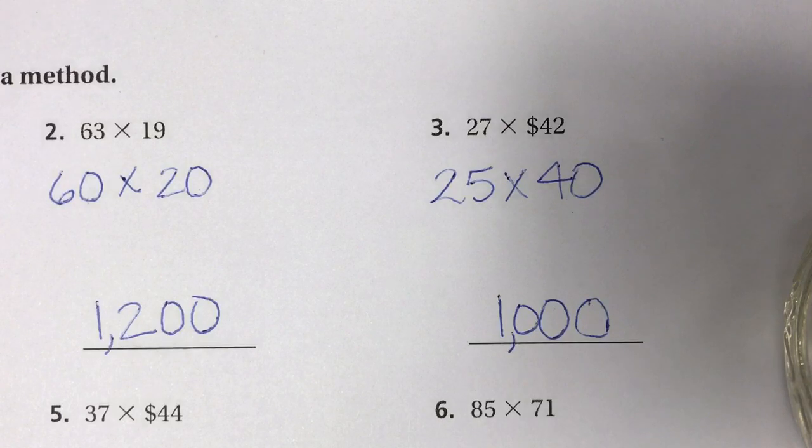So the estimate for 27 times 42 using compatible numbers is 1,000. Certainly you can choose either method, but we learned today that if you choose a compatible number, you'll get a more accurate answer.